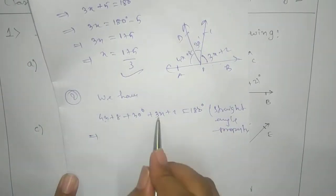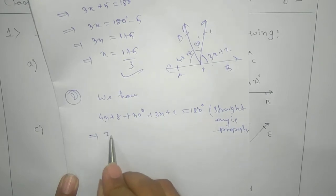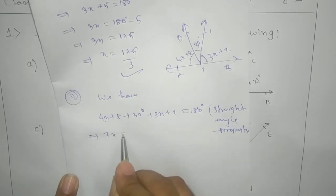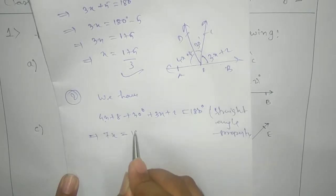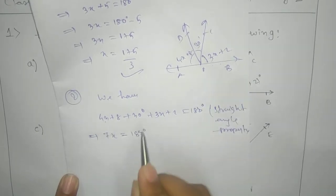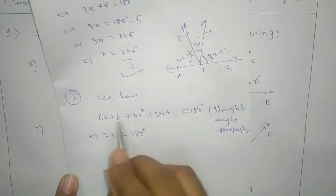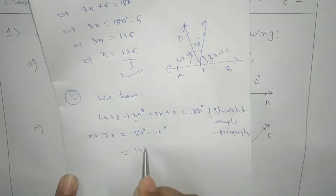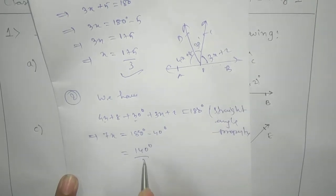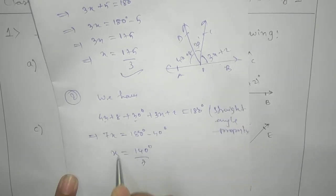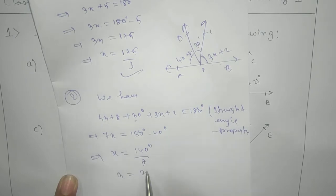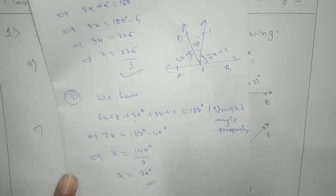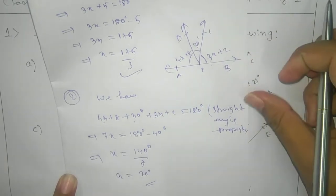Proceeding: 4X plus 3X gives 7X, and 30 plus 10 gives 40, so 7X plus 40 equals 180, giving 140 by 7. Therefore X equals 20 degrees. This is our answer for the second one.